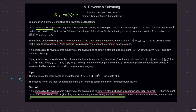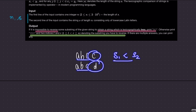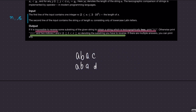Lexicographic ordering works like dictionary ordering — you compare the first differing character between two strings. For example, if the first differing character in S1 is less than in S2, then S1 is lexicographically smaller. If the first differing character in S2 is greater, then S2 is lexicographically greater than S1.